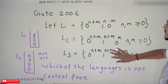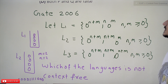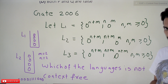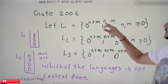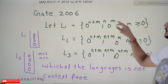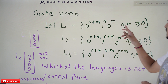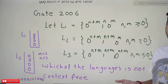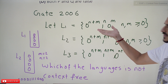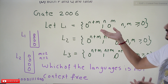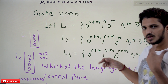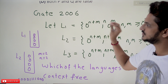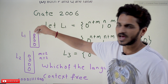Coming to the next one, Gate 2006. L1 = 0^(n+m) 1^n 0^m, where n, m ≥ 0. This is a bit complex, so think about it properly. This is a context-free language. Why is it context-free? You take any n and m value — for example, n+m zeros — whenever you find zeros, push onto the stack.